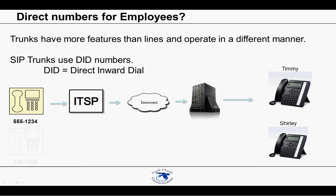Now someone else needs to call Shirley. They call her private number, 555-1256. That call is routed to your ITSP, who sends the call via the internet to your phone system, which routes that call to Shirley. Your phone system may only be configured to accept 4 SIP trunks. You can have as many DID numbers as you want routed over those 4 SIP trunks. Using our previous example, you can have 4 direct numbers for key employees and a main number for your business — all routed over the same 4 SIP trunks. In this scenario, you're limited to 4 concurrent calls, but you don't have to pay for an expensive line for each number. You just have one pipe, the internet, for these calls to come in from.